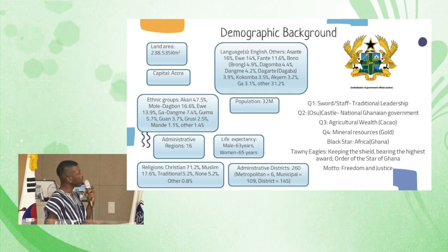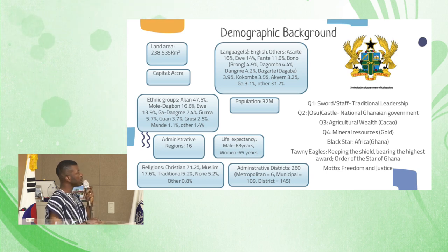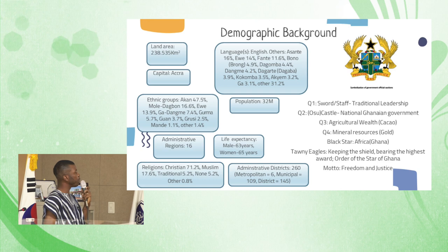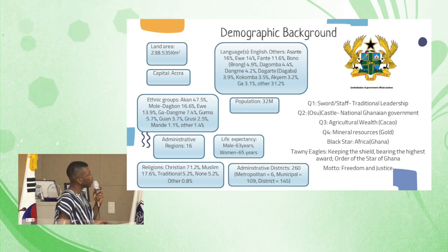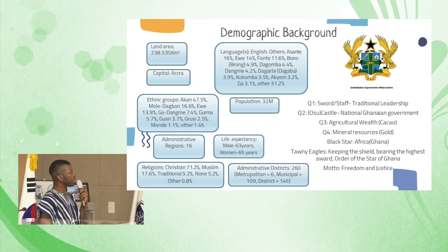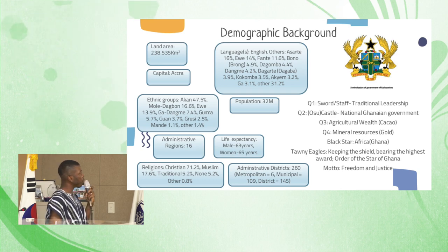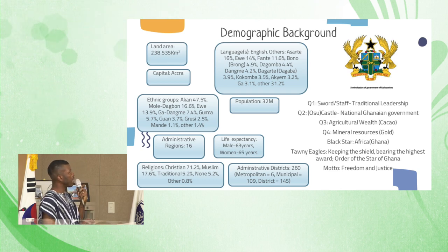The second quarter represents a castle — the Osu Castle, which is a prominent tourist site and represents the national Ghanaian government. The third quarter represents our culture, specifically cocoa. The fourth one represents our resources. And we have the black star, which represents African unity.